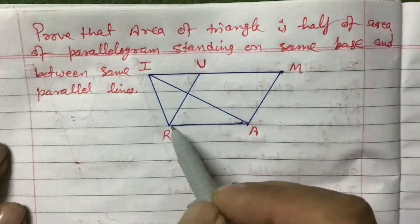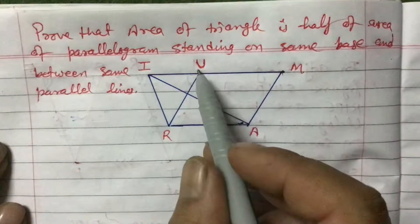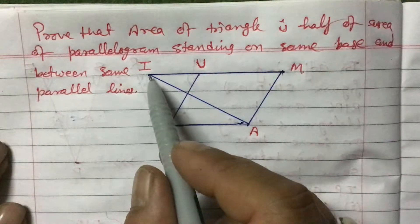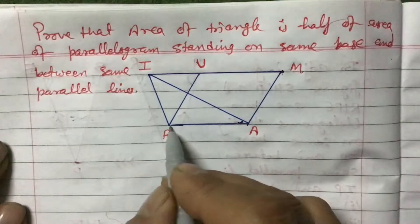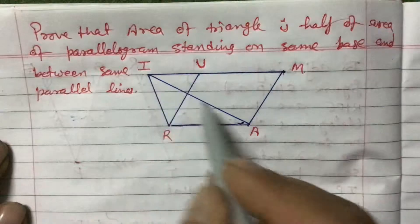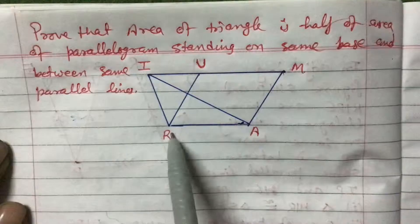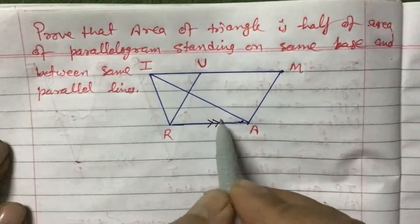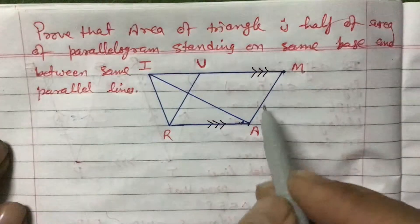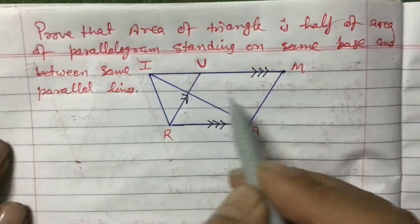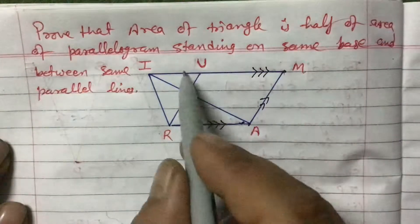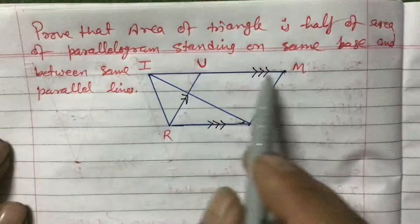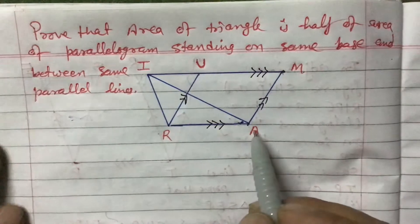We can draw a figure like this. RAMU is one parallelogram and RAI is one triangle. They are standing on the same base RA — RA is the base for both this parallelogram and this triangle. RAMU is on base RA, RAI is on base RA, and they are between the same parallel lines IM and RA.